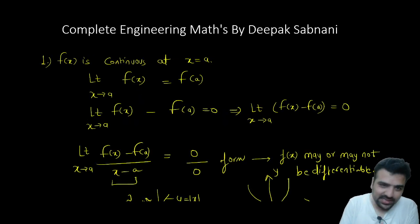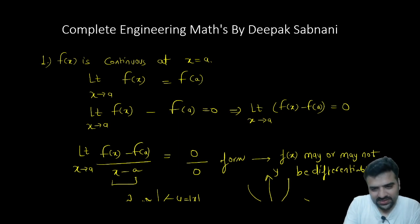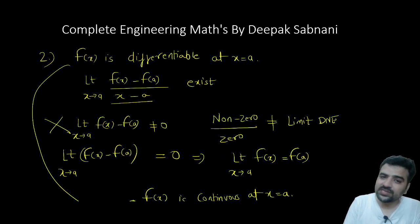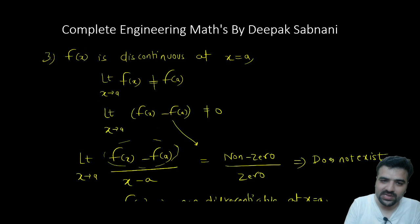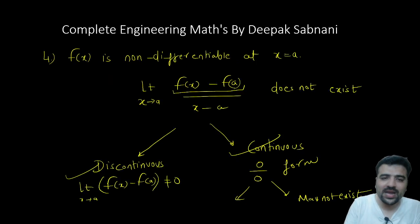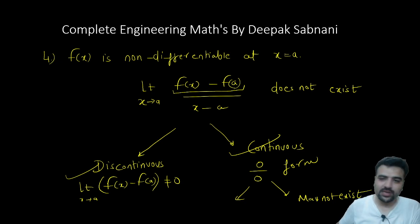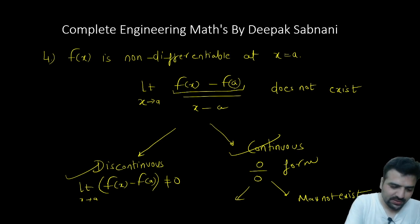Summary of the four cases: if a function is continuous, it may or may not be differentiable. If it is differentiable, then it is definitely continuous. If it is discontinuous, then it is definitely not differentiable. If it is non-differentiable, it may be continuous or may not be continuous. I hope these four points are very clear. Thank you for watching.